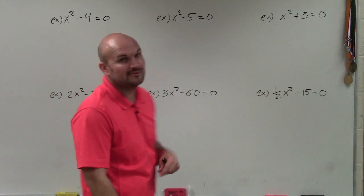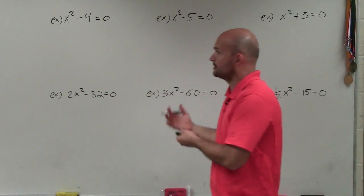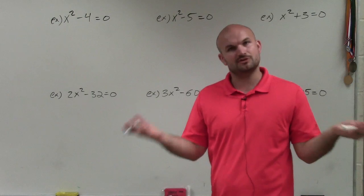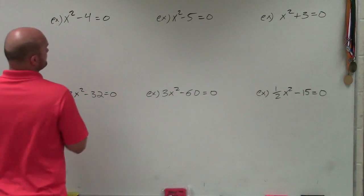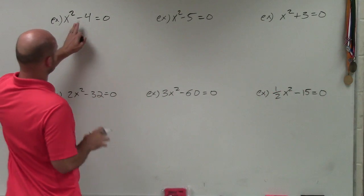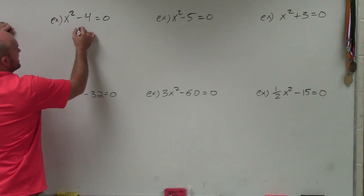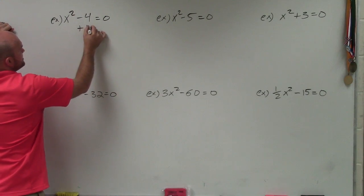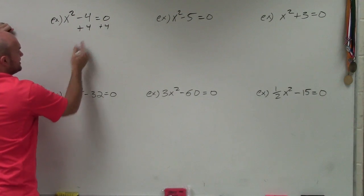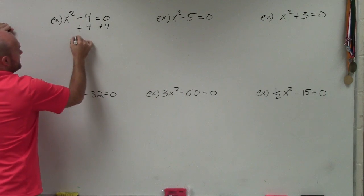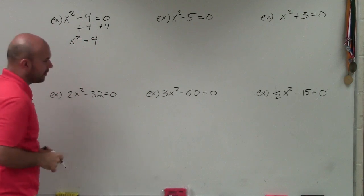So in the first example here, we have x squared minus 4 is equal to 0. To isolate the variable, we need to add a 4 to the other side. So I'm going to add a 4 using my addition property of equality, and then I have x squared is equal to 4.